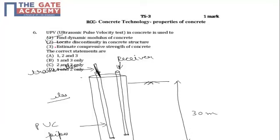It is used to find the dynamic modulus of concrete, calculated by knowing the travel time of pulse waves through the material. Secondly, it locates discontinuity within the length. So it gives us both options 1 and 2 as correct.